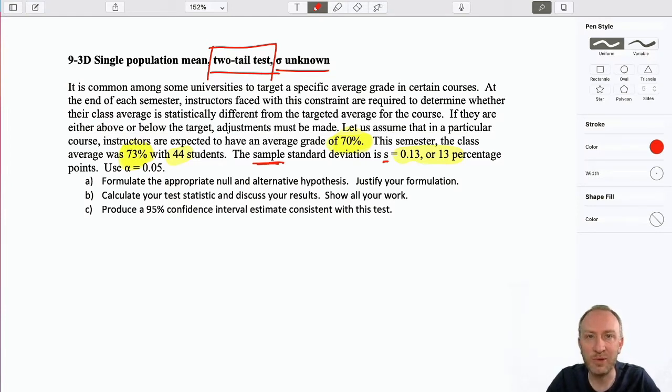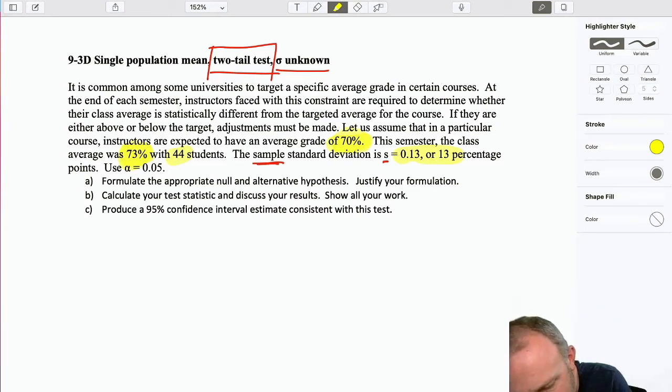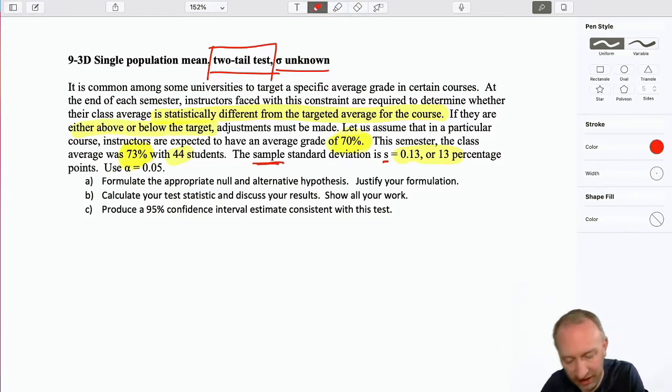Well, what kind of test are we doing? A lower tail or an upper tail test? Well, here I can see if the average is statistically different from the targeted average. In other words, either above or below. So we have this target of 70 percent, and the instructors will need to make adjustments to their grade distributions if the average is either greater than that or less than that. They need to make an adjustment.